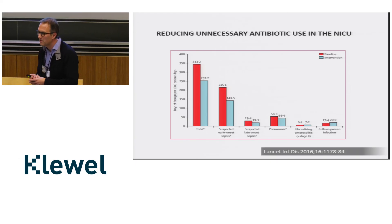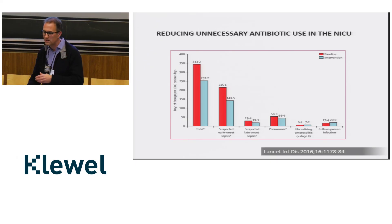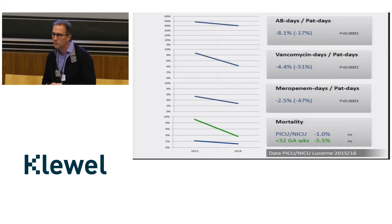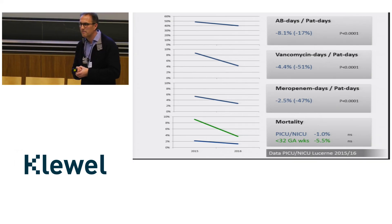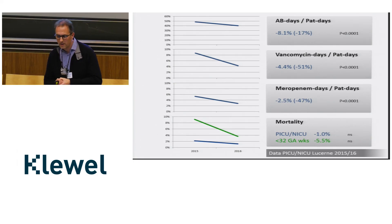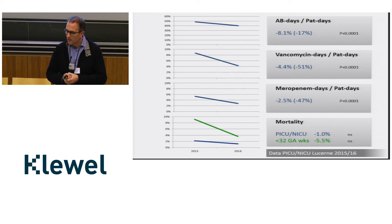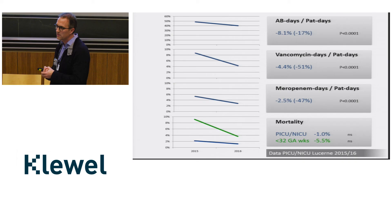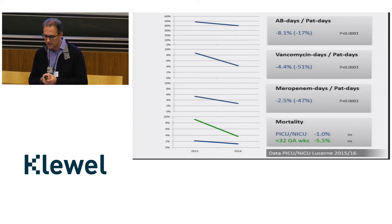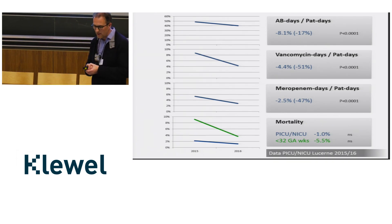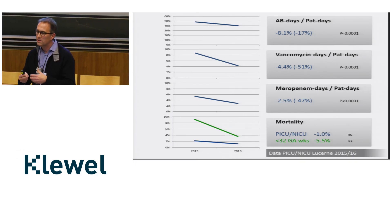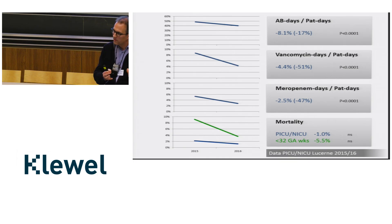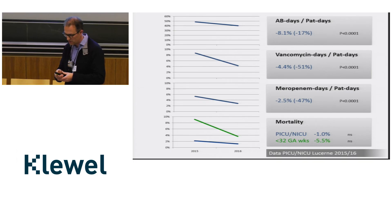Antibiotic stewardship sounds like it requires a lot of resources — an infectious disease specialist and so on. But is it possible with fewer resources? These are data from Lucerne. At the end of 2015 we had the impression we were using too much antibiotics, too much vancomycin and meropenem. We were able to reduce antibiotic days by a relative 17%, and to reduce vancomycin and meropenem use by around 50%. Mortality was not increasing. This shows it is possible — though of course it depends on where you start. If you are already using antibiotics very carefully, further reduction may not be possible.